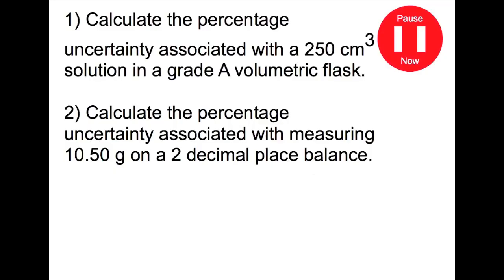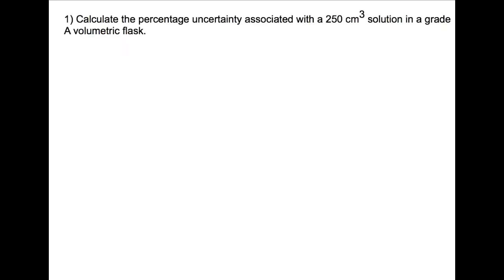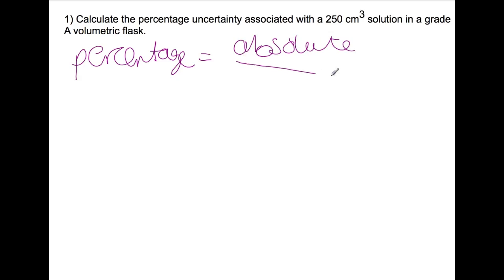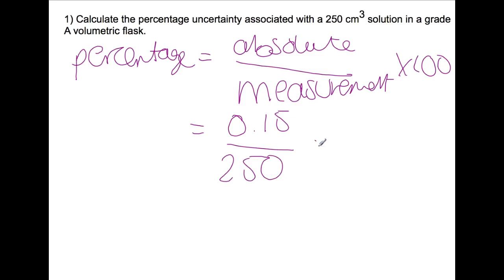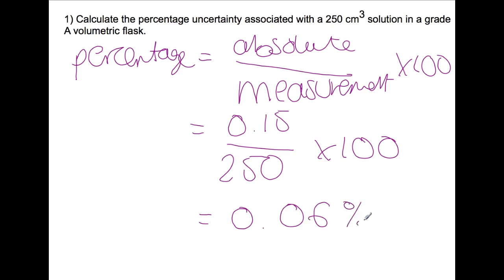Here are two examples for you to try. In this first example, we're calculating the percentage uncertainty in a grade A volumetric flask of 250 millilitres. We take the absolute uncertainty — from the table it's 0.15 — divide by the measurement of 250 ml, and multiply by 100. This gives us a very small percentage error of 0.06%.